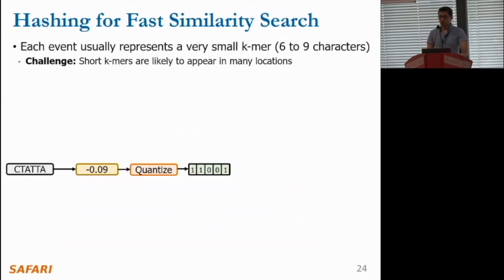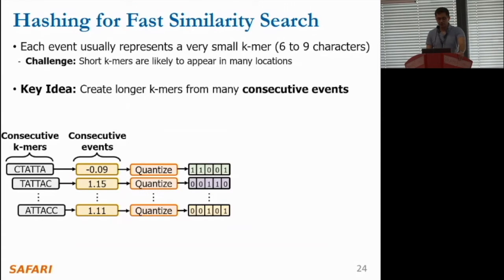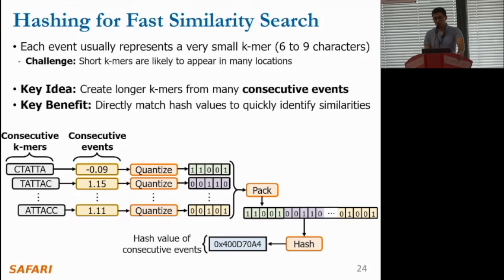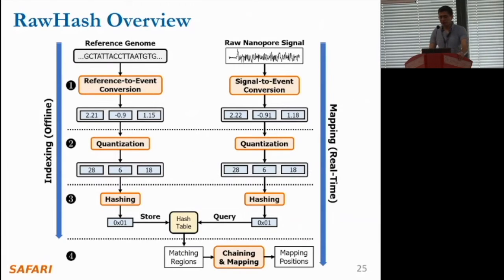The third step in our mechanism generates hash values from the quantized values of events. An event typically represents a very small k-mer of six to nine characters, which results in a challenge: these short k-mers can appear in a large number of regions in the reference genome, making direct matching of quantized event values infeasible. Our approach is to form longer k-mers from consecutive events by packing the quantized values of these events into a single value. To efficiently store these packed values, we generate their hash values using a hash function. This allows direct matching of larger regions from their hash values, enabling fast identification of similarities.